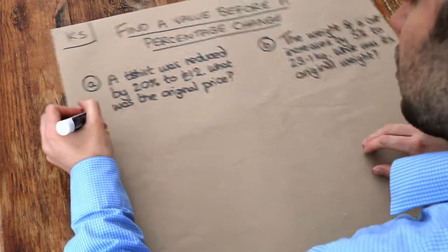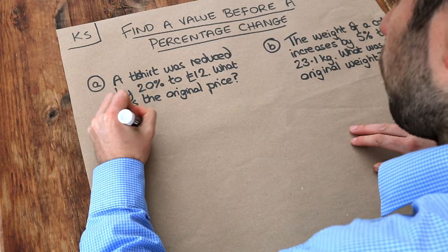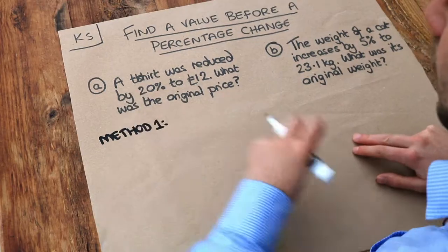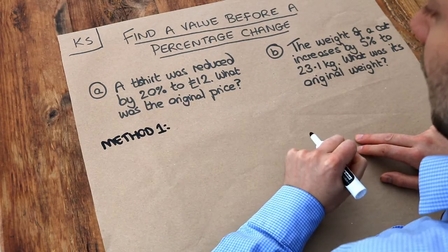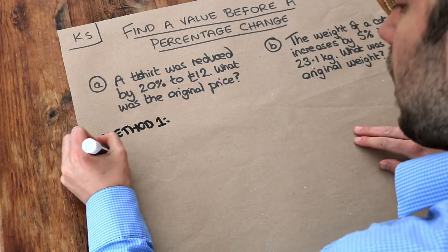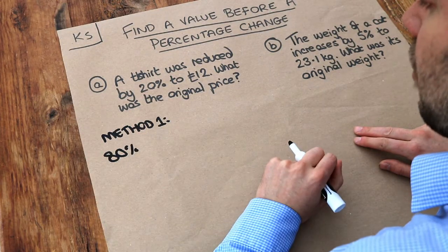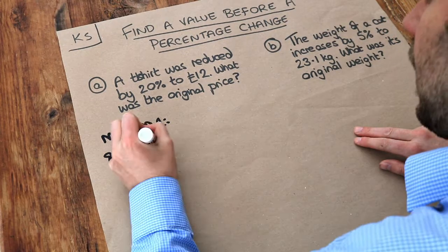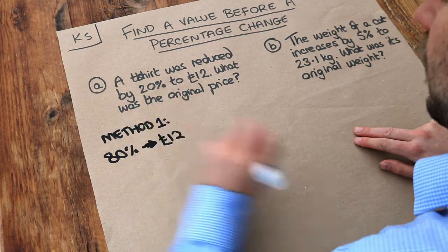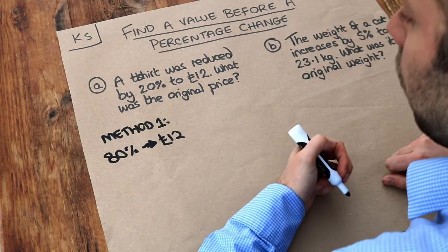And there's two ways to do this. Method one is to think, what percentage am I at now? Well everything starts 100%, so if the t-shirt was reduced by 20%, it's now at 80% of its value. And 80% of its value, the reduced price, is £12.